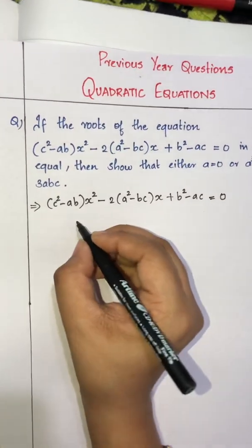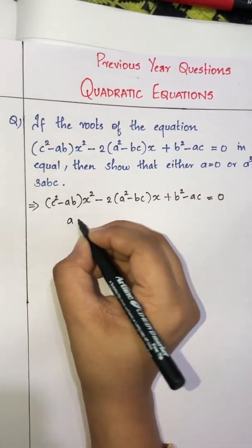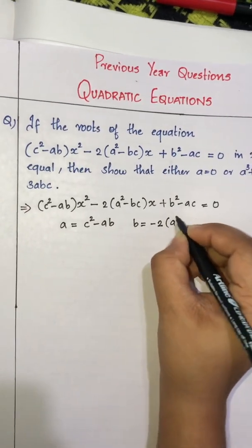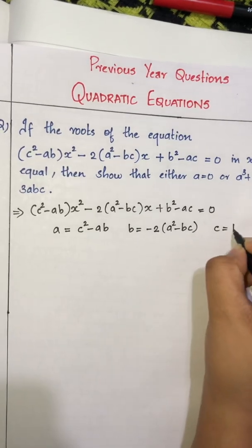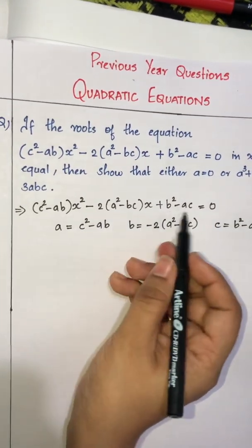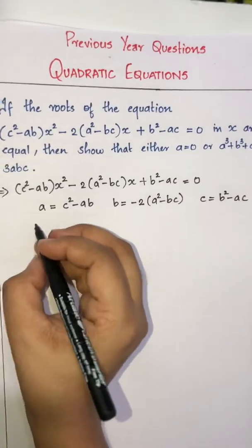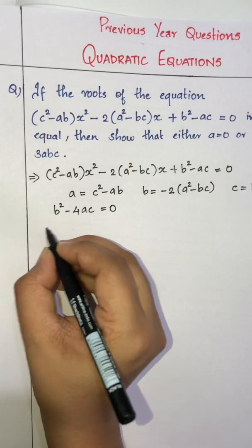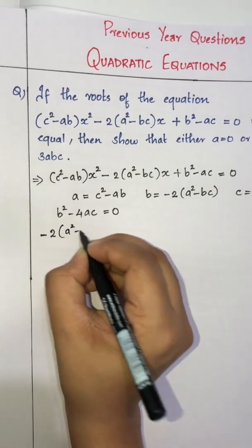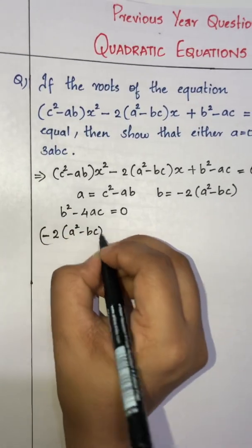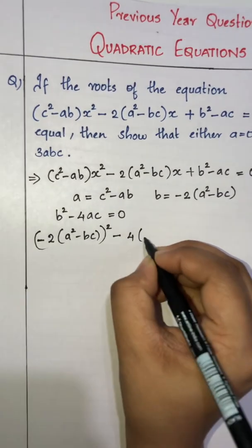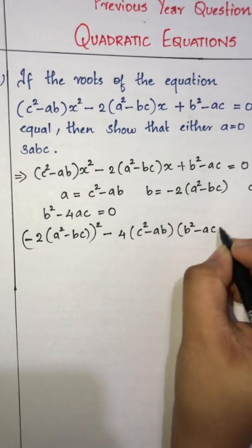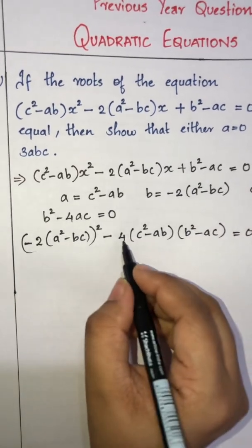Since roots are equal, the discriminant B²-4AC = 0. Here A = (c²-ab), B = -2(a²-bc), and C = (b²-ac). So we have: [-2(a²-bc)]² - 4·(c²-ab)·(b²-ac) = 0.